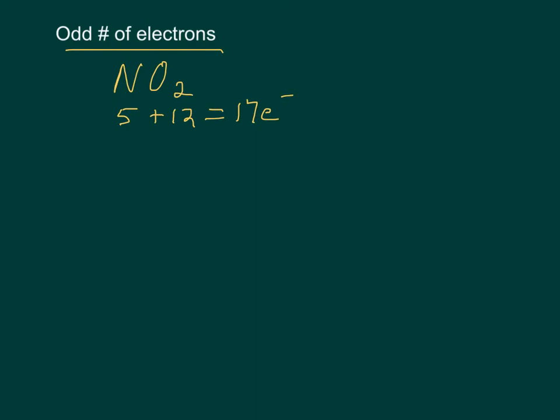So we're going to follow the rules. We'll put N in the middle. We'll assume all single bonds. We'll give everybody 8. And we'll count, and we'll see that there's 20 electrons. So I have 3 extra.